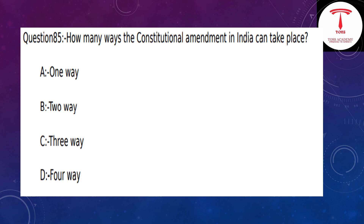How many ways can a constitutional amendment in India take place? The answer is three ways — option C.